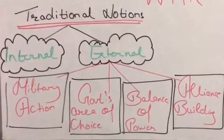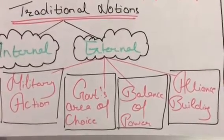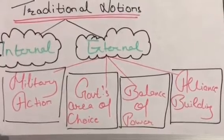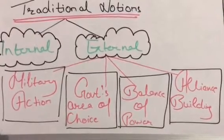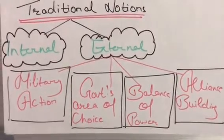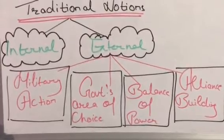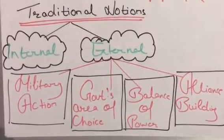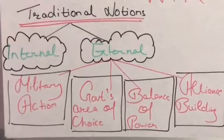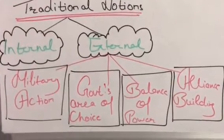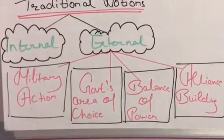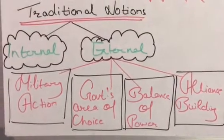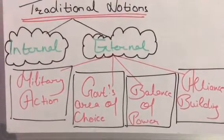The third main element is balance of power. Balance of power simply means maintaining a balance between bigger countries and smaller countries. Our world is divided into two kinds of powers — some are very developed and some are very underdeveloped. Balance of power is about maintaining balance between small and large countries.